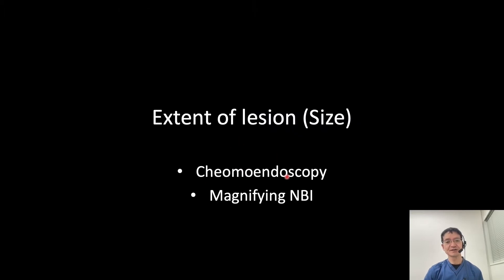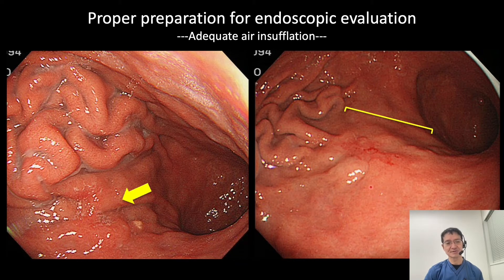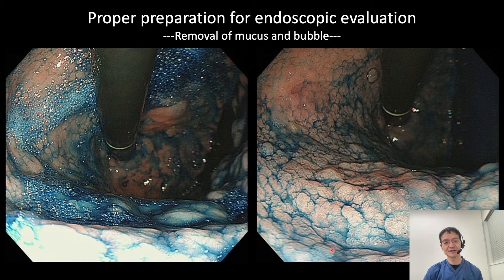Tumor extent is usually diagnosed by chromoendoscopy or by magnifying NBI. First of all, proper preparation and adequate air insufflation is very important to make a correct diagnosis. Without these conditions, we cannot make accurate diagnosis. Moreover, even with use of chromoendoscopy or magnifying endoscopy, if mucus or bubbles cover the surface of the lesion, correct diagnosis is difficult. Proper preparation and observing conditions are the first step to accurate staging diagnosis.